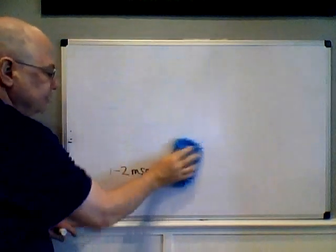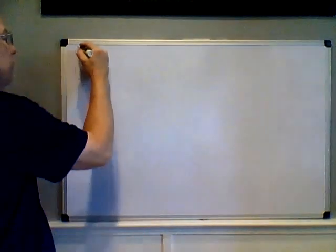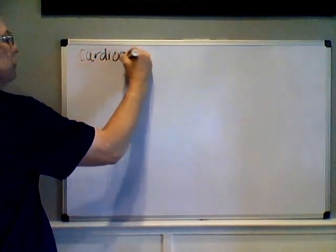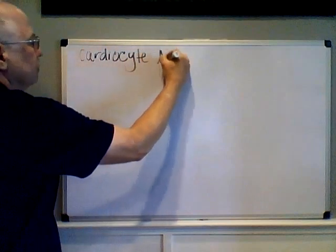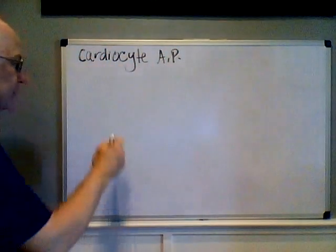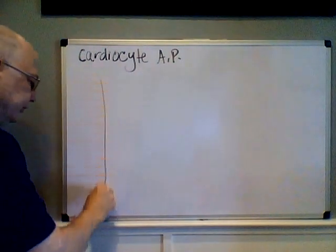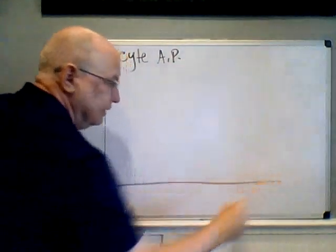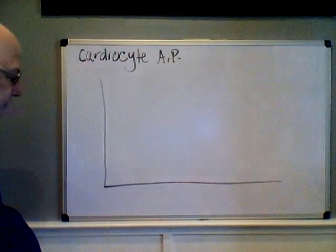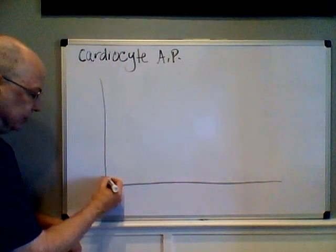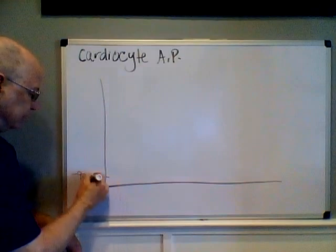The cardiocyte action potential is very, very different. We will talk about the timing, but it's definitely different. It turns out cardiocytes are actually resting at around minus 90 millivolts.